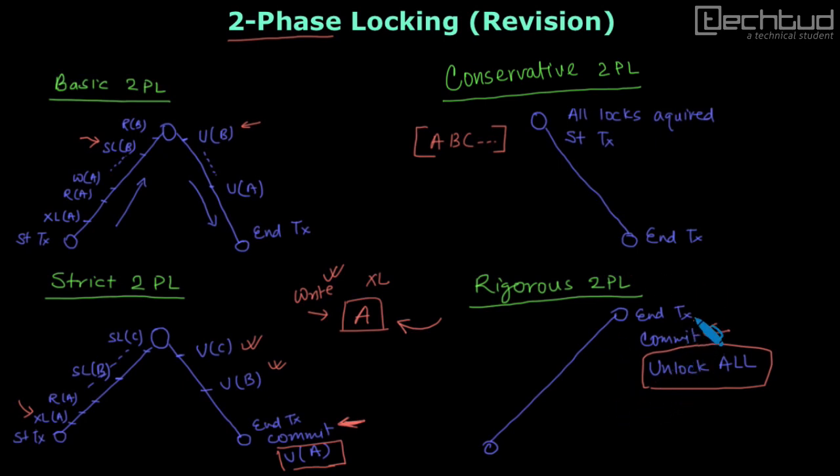These are the main thing about two-phase locking. Now, here you will have, I mean in basic 2PL, you have deadlock. Here you have deadlock problem and you have cascading rollback. Both are there.